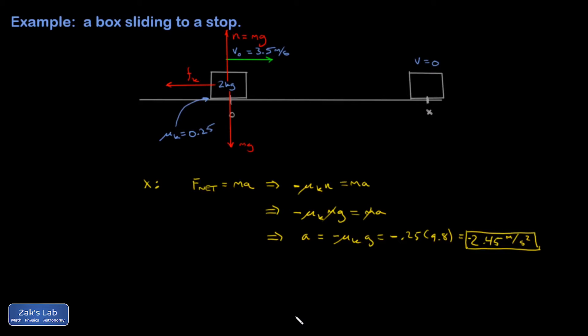All right. So now I have a kinematics problem. I have an initial velocity of 3.5 meters per second. I have an acceleration pointing the opposite direction, so we're encoding that with a sign.